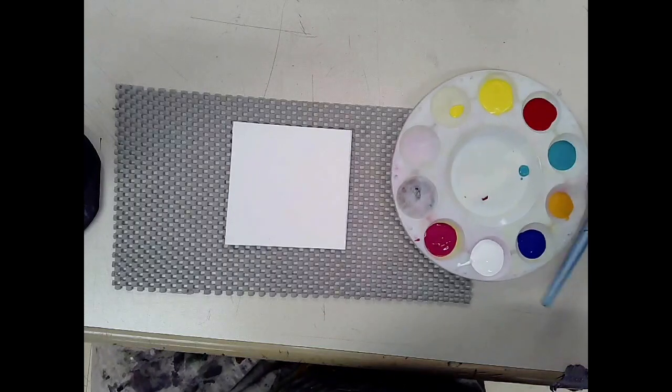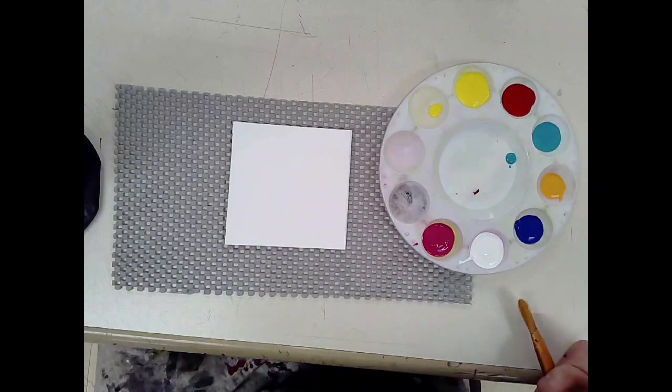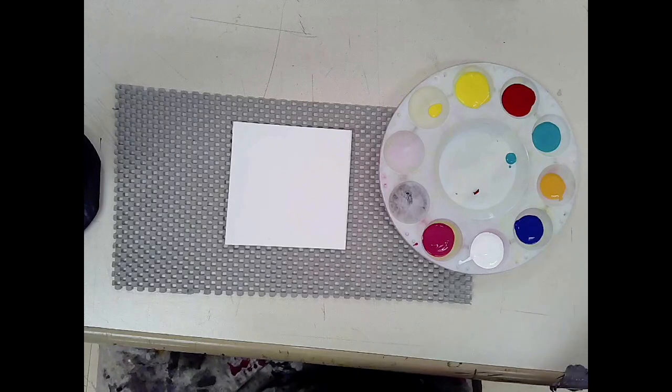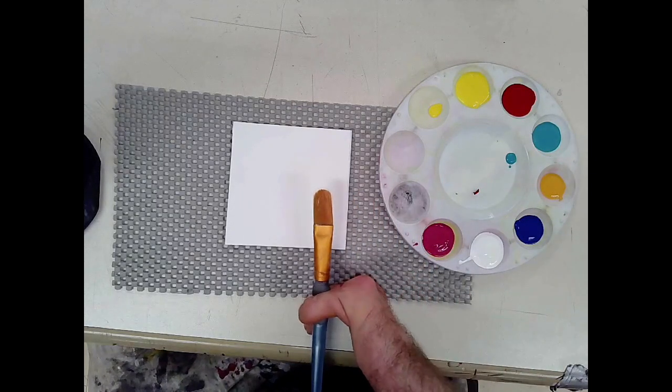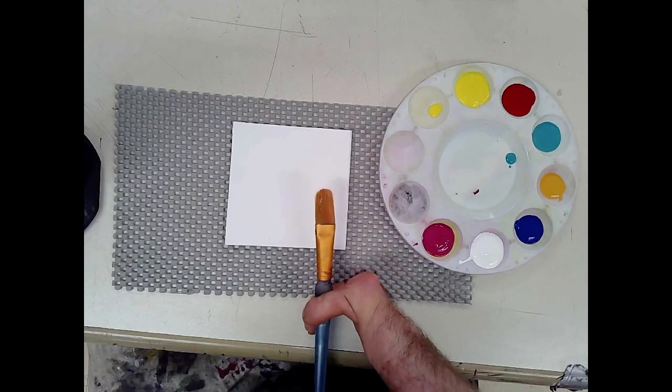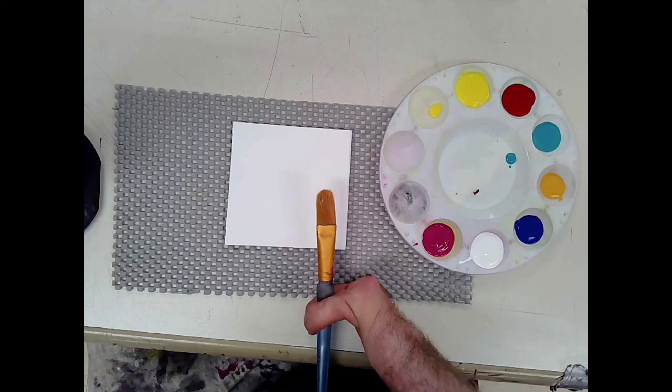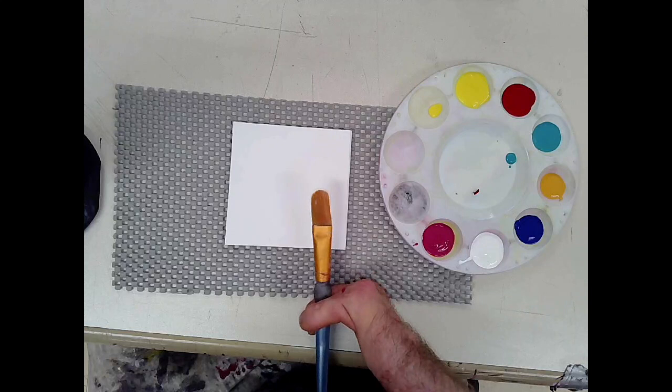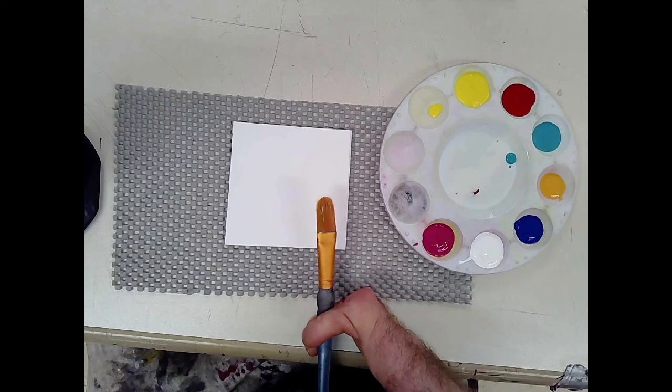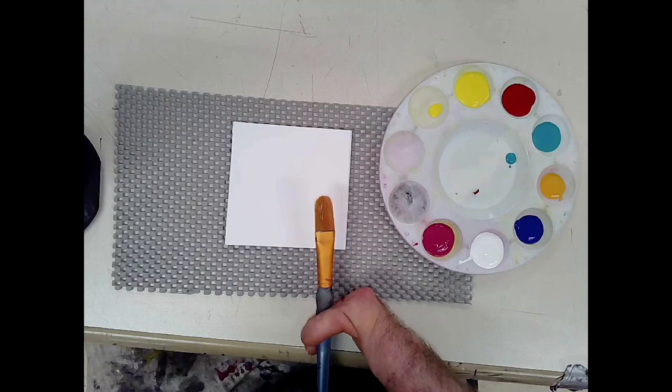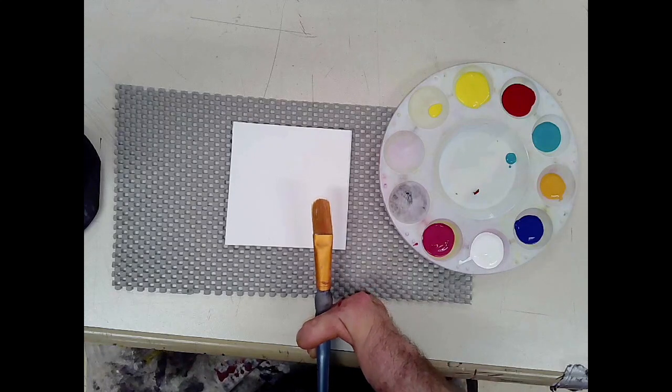This exercise is about making gradients with a filbert brush, which has slightly round edges, and the other objective here is to try to find balance in two contrasting colors.